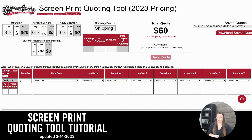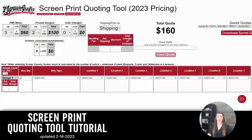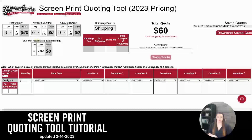If it is a process design — so if it's simulated or the four color process — this one is per design. So let's say you have a left chest and a back, you would click two in that instance. Or if it's just your standard spot printing, you can leave that at zero and move on to the next section.